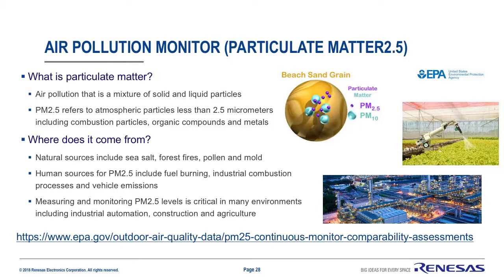What is particulate matter? Particulate matter air pollution is defined by the U.S. EPA as an air-suspended mixture of both solid and liquid particles. They are often separated into three classifications: coarse, fine, and ultrafine particles. Coarse particles have a diameter between 10 microns and 2.5 microns and settle relatively quickly, whereas fine (0.1 to 2.5 microns in diameter) and ultrafine (less than 0.1 micron in diameter) particles remain in suspension longer.